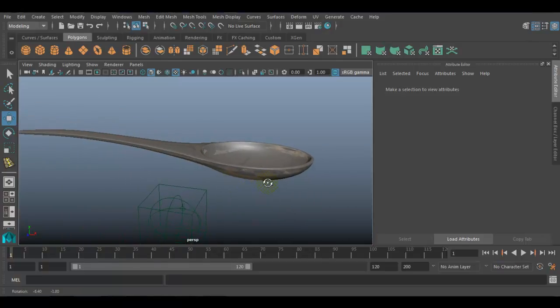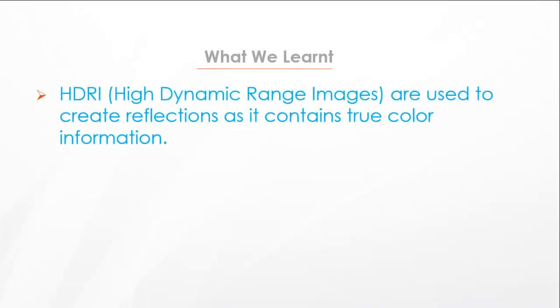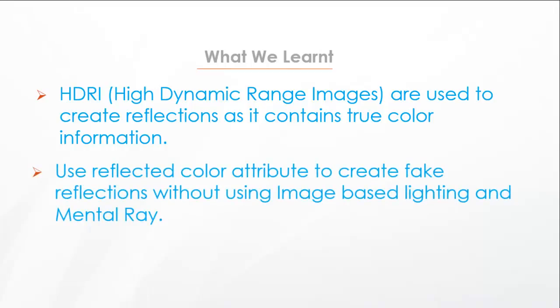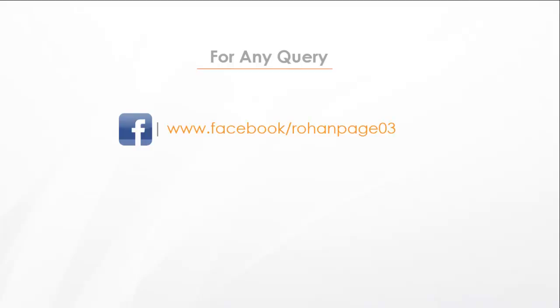This is the way to create realistic, or fake HDRI reflections. Let us see what we have learnt in this video. We learnt that HDRI — High Dynamic Range Images — are used to create reflections as they contain true color information. Use the Reflected Color attribute to create fake reflections without using image-based lighting and mental ray. For any query, follow me on Facebook at www.facebook.com/RohanPage03 or email me at rohan.pageanimator@gmail.com.